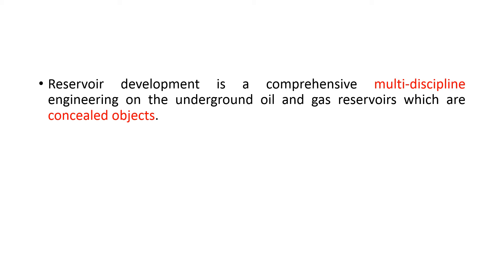The second important word is concealed objects. As you know, the reservoir is underground — maybe two or three kilometers underground — so you cannot actually see what's going on below the ground; it's concealed, something that is hidden. These sentences tell us that when the reservoir is going to be developed for production, there are lots of uncertainties which are not known. The reservoir development plan makes these unknown objects revealed and gives us the path toward better oil recovery and production with this particular reservoir. So we have some concealed objects and reservoir development helps us to reveal these objects, to study better and to understand better.